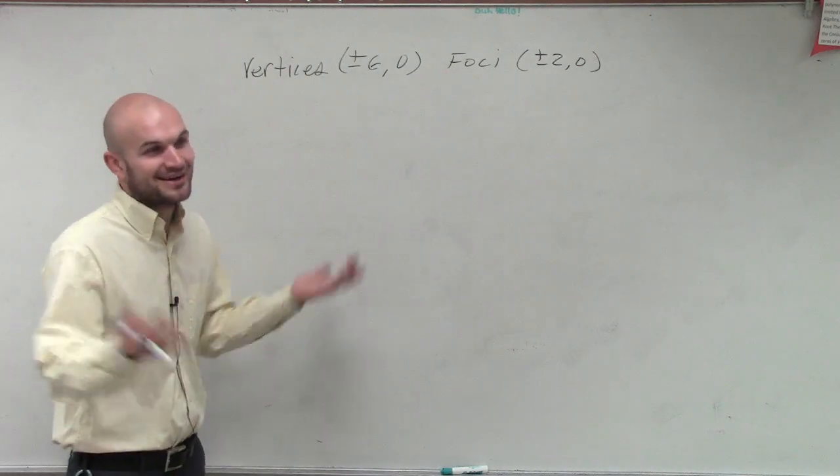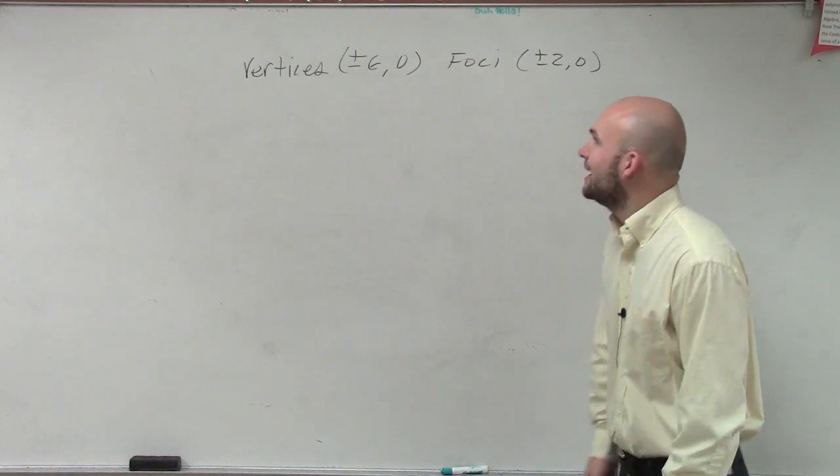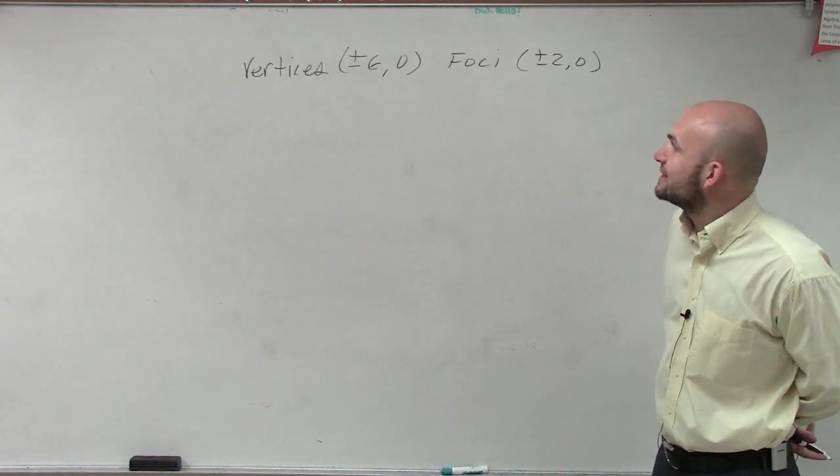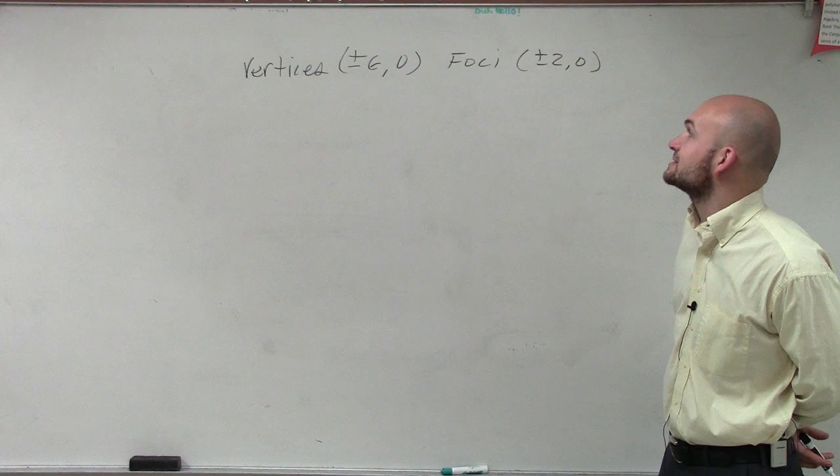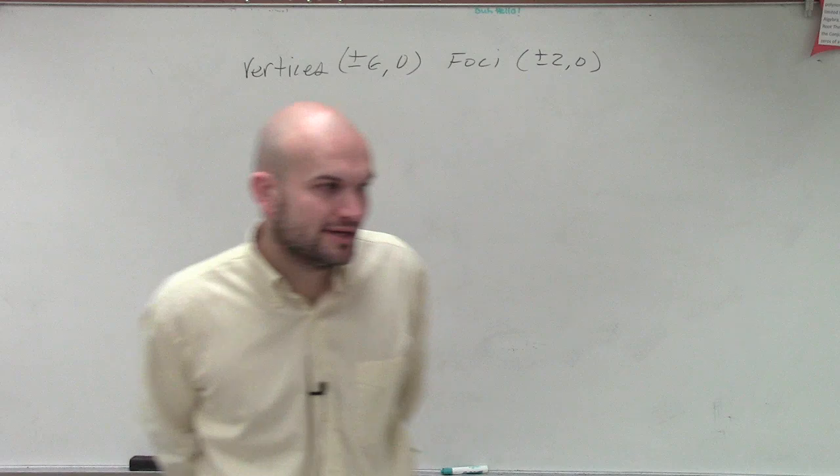But, anyways. Yeah, yeah. That would be a fun intro, I guess. So, anyways. So, we're given the vertices. Negative 6 or plus or minus 6 comma 0. And the foci is plus or minus 2 comma 0.